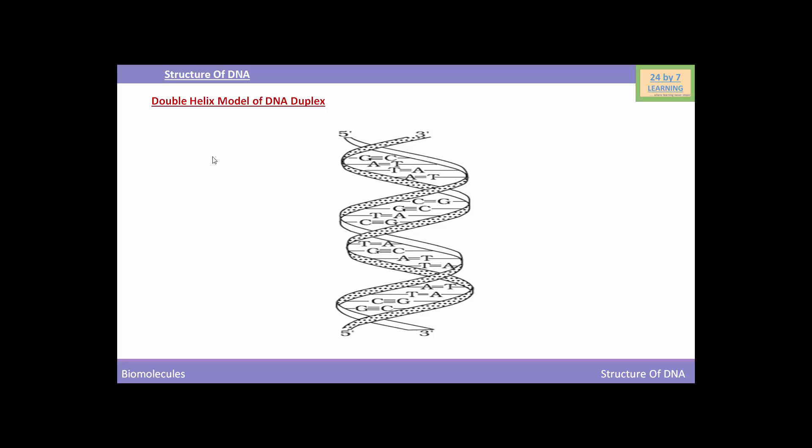One full turn of helical strand would involve 10 base pairs. This is the full complete turn. One turn of 360 degrees of the helical strand has about 10 nucleotides on each strand of DNA.